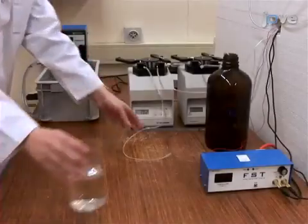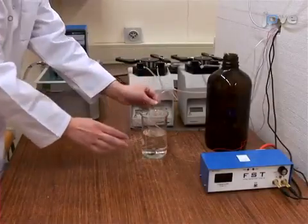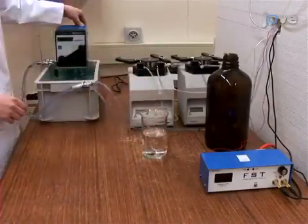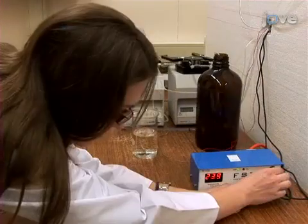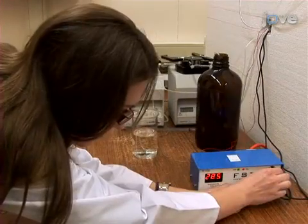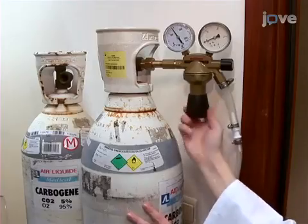Begin this procedure by rinsing the perfusion circuit with distilled water for a minimum of 20 minutes. Then, turn on the heating systems. Start the carbogen bubbling in the circuit.